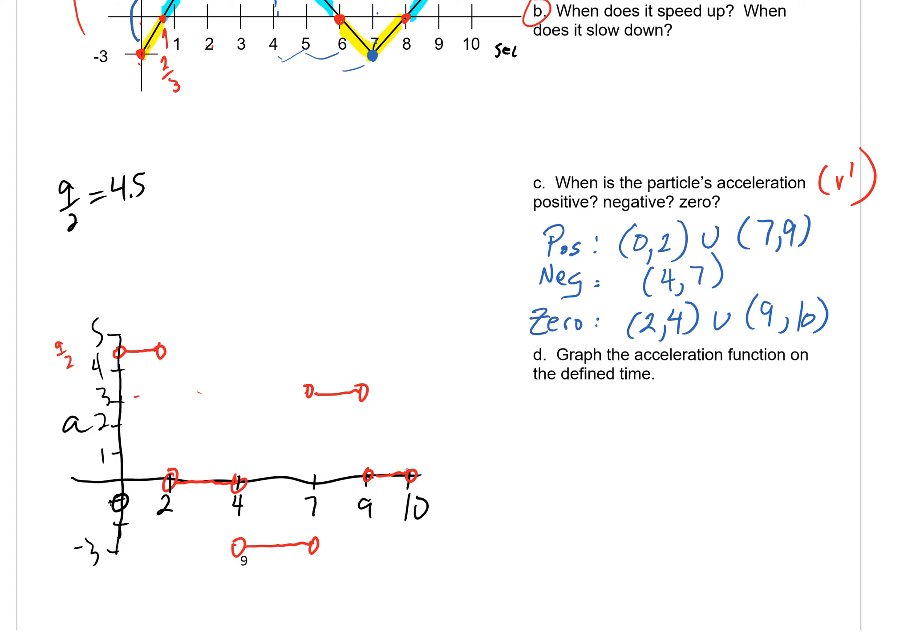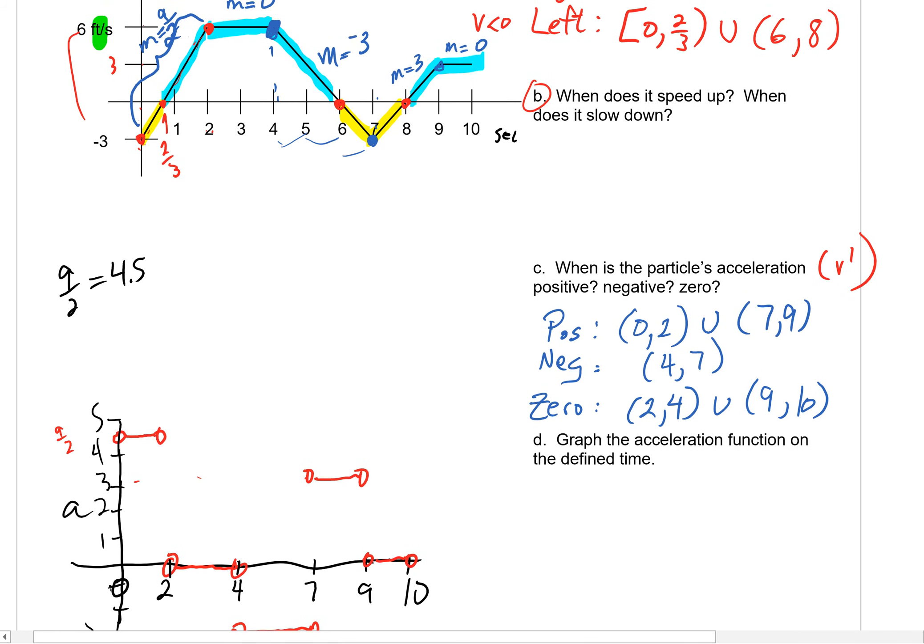We've got one last thing we need to do and that's addressing when we're speeding up and when we're slowing down. Remember with speeding up and slowing down, speeding up, acceleration and velocity have to have the same sign. And slowing down, they're going to have opposite signs.